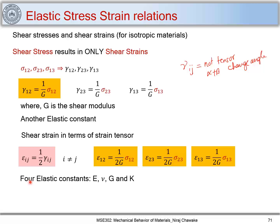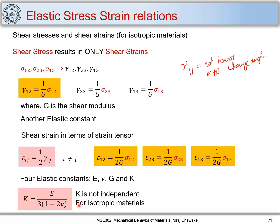We now have four elastic constants: Young's modulus, Poisson's ratio, shear modulus G, and bulk modulus k. We found the relation k equals E upon 3 times (1 minus 2 mu), so k is not independent — it can be written in terms of E and mu. This is for elastically isotropic materials. The question that remains is: is G an independent constant? That we will see in the next part.